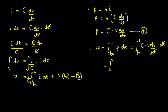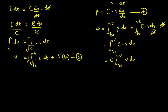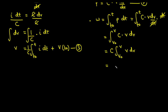We integrate with respect to v from v₀ (initial voltage) to v (final voltage) of C·v·dV. Since C is a constant, we pull it out: C times the integral from v₀ to v of v·dV. Performing the integration, the integral of v is v²/2, evaluated from v₀ to v.